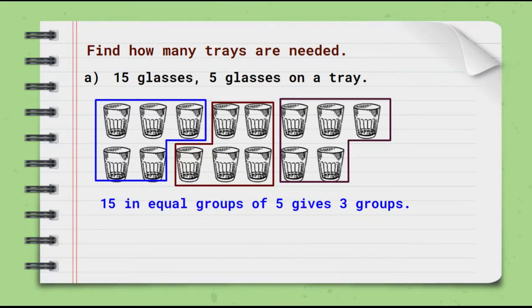Then we can say 15 in equal groups of 5 gives 3 groups. We can also write it as 15 divided by 5 equals 3. Therefore, 3 trays are needed.